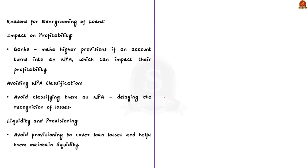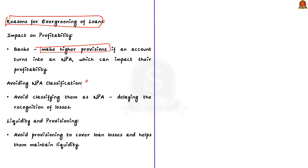Now let us see the reasons for adopting this practice. Firstly, impact on profitability — banks need to make higher provisions if an account turns into an NPA, which will significantly impact their profitability. Secondly, avoiding NPA classification — banks resort to evergreening to avoid classifying loans as NPAs, thereby delaying the recognition of losses. Thirdly, liquidity and provisioning — evergreening allows banks to avoid provisioning to cover loan losses and helps them to maintain liquidity.